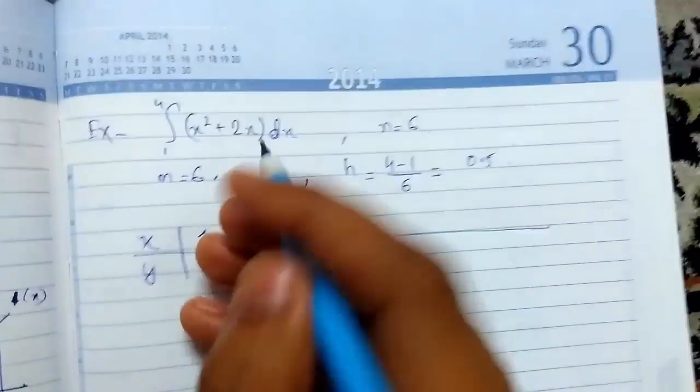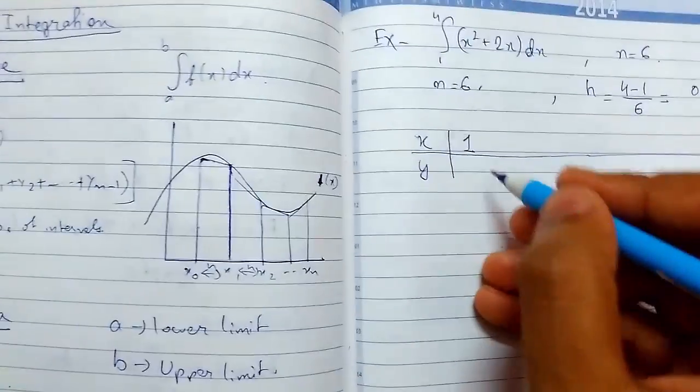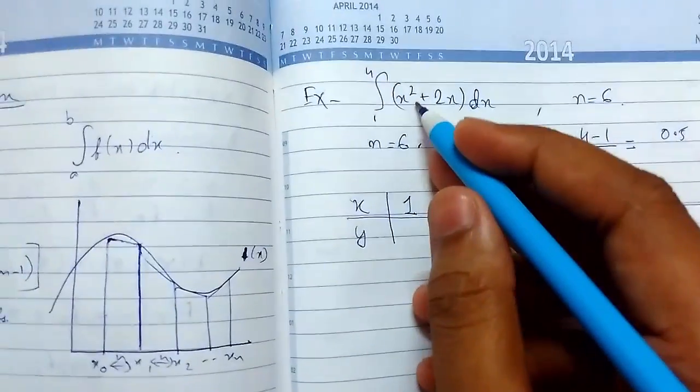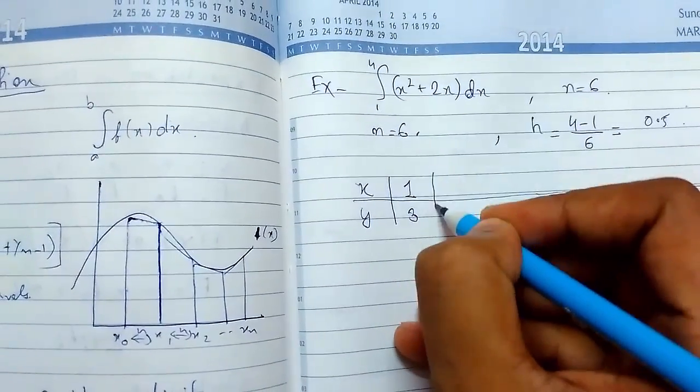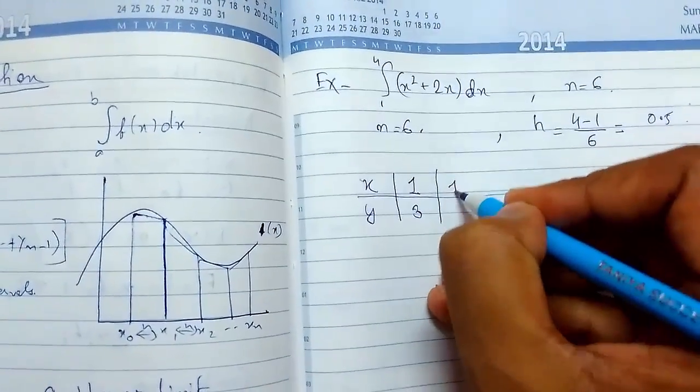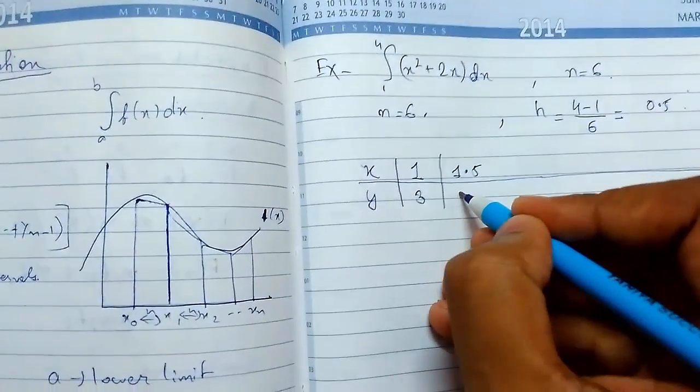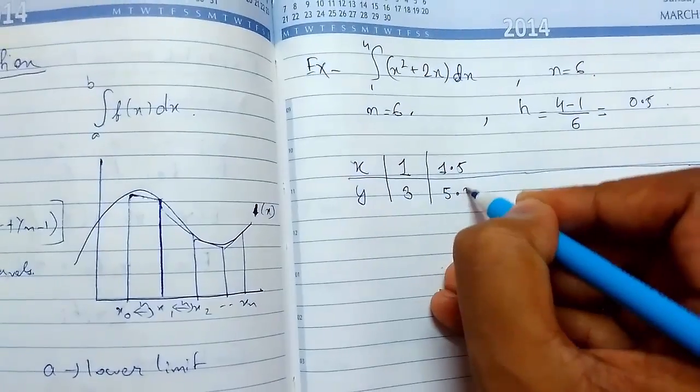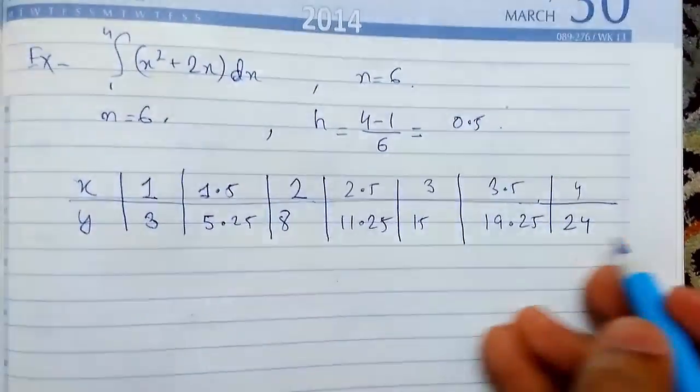x0 is a, which is 1. The value of y0 = 1² + 2(1) = 3. Next, x1 = 1 + 0.5 = 1.5. Putting the values in: use a calculator to calculate all the values. I've found all the values.